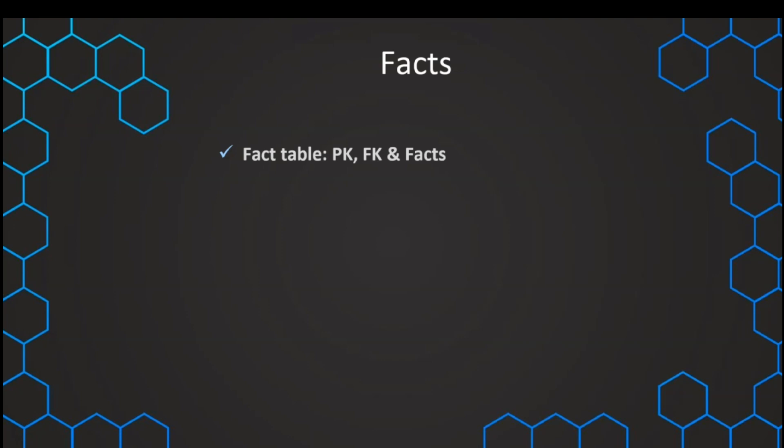Therefore, a fact table consists out of our primary key, which is uniquely identifying every single row in our fact table. Then we have, usually, multiple foreign keys, that are the reference to our dimensions. And then, of course, we have the facts themselves.